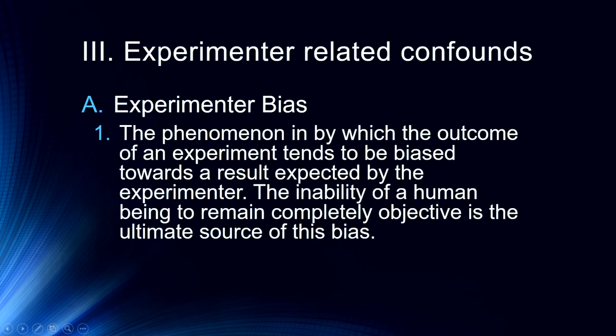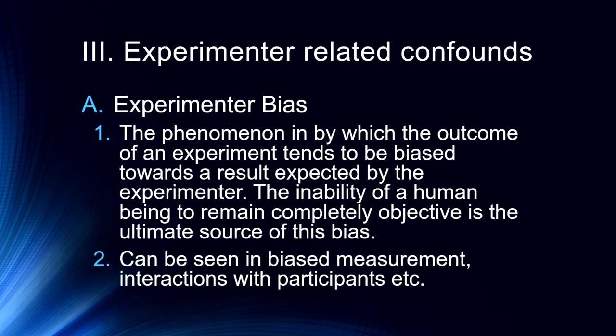Particularly in small labs where everyone knows what the point of the research study is and what the hypothesis is, we can have a serious potential source of bias because people might behave differently based on what they think is supposed to happen. This can be seen in various ways — we can get biased measurement. There are classic studies involving how fast people are walking after they leave a research study. In the earliest versions of this, experimenters were timing participants as they were leaving, and it turned out that unconsciously they were altering the way they timed those individuals such that there was bias in the data.